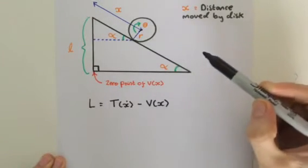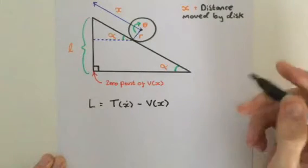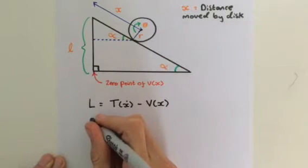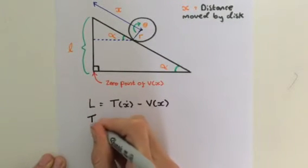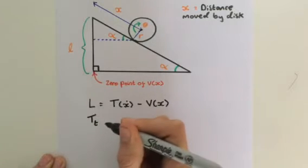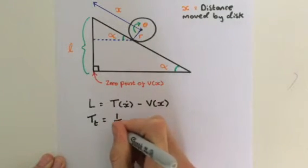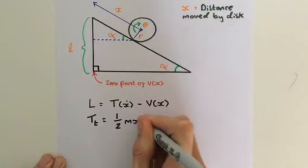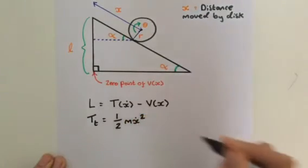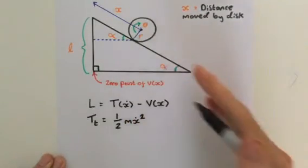The translational kinetic energy is very simple. Translational kinetic energy, I'm just going to put T with a subscript t, and that's just going to be a half m x dot squared. We already know that, that's translational kinetic energy.